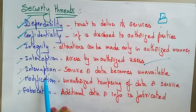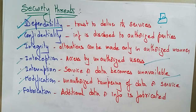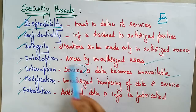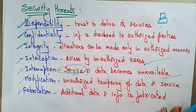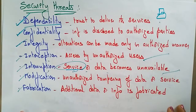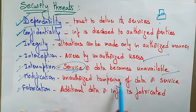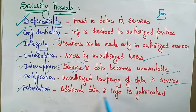Interruption as a security threat means a service or data becomes unavailable — whenever the wanted data or service is not available, an interruption threat occurs. Modification means unauthorized tampering of data or service. Fabrication means additional data or information is fabricated. These are all the different security threats in distributed systems.